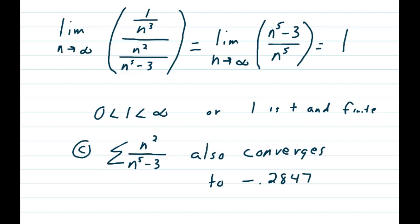Zero is less than 1 is less than infinity, or 1 is positive and finite. So the new series, summation n squared over n to the fifth minus 3, also converges to an approximate value of negative 0.2847.